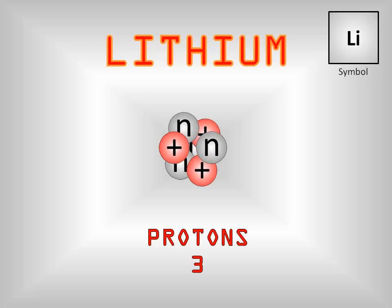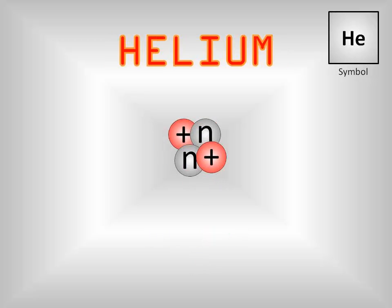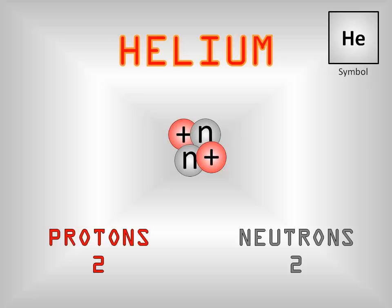But what about the neutrons? Elements can have a varying number of neutrons within the nucleus, but not all combinations of protons and neutrons are possible. Looking at helium again, most nuclei contain two protons and two neutrons.